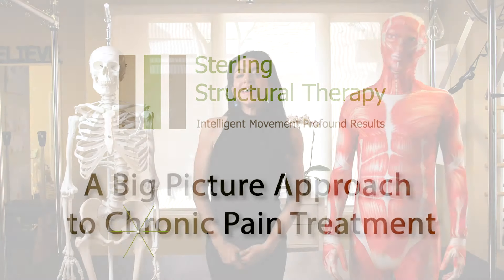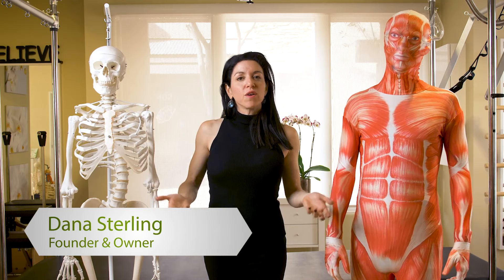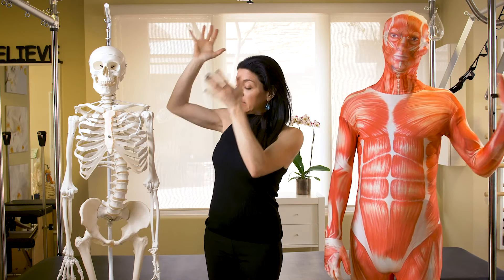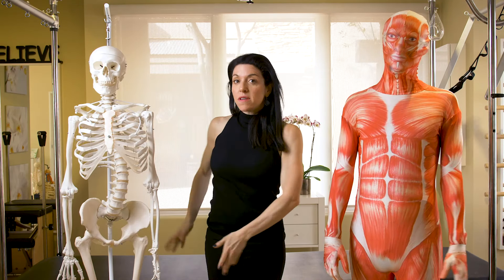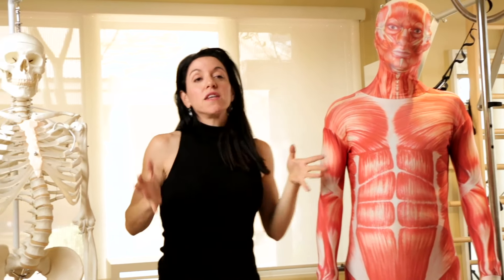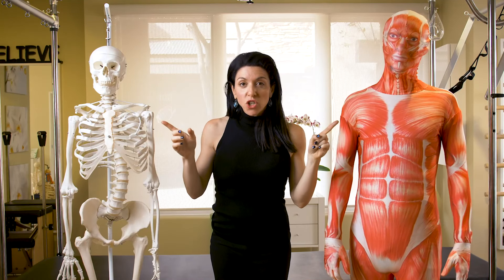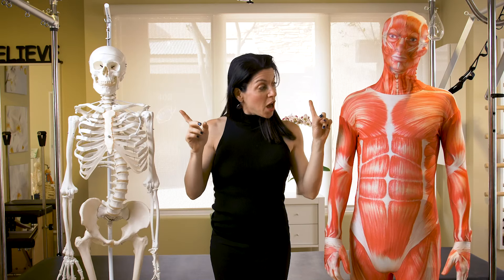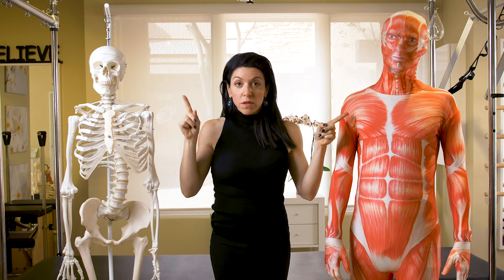Sterling Structural Therapy is a system approach to the problem of orthopedic and chronic pain conditions. Two systems you're very familiar with are the skeletal system and the muscular system. What we specifically focus on is the fascia system — connective tissue — which is what connects those muscles to those bones.